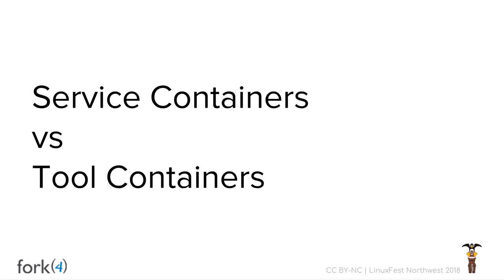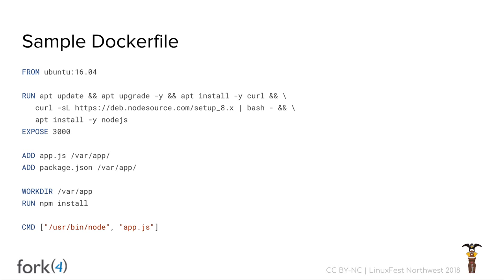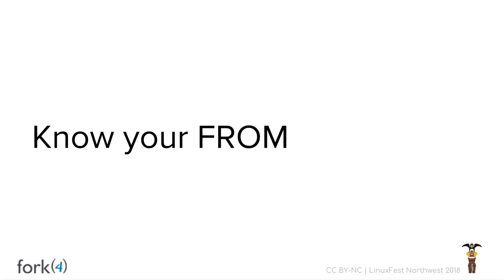Security starts at the top. Let's look at a sample Dockerfile. This is a very basic Dockerfile — you've probably written something like this. We're pulling down Node, installing it, adding our app, and now we have a Node runtime application container. But there's one particular line at the top I want to focus on: 'FROM ubuntu:16.04.' This tells Docker this is the image I want to base my image off — I'm going to inherit everything from this and build my new thing on top of it. My first tip: know your FROM — know where you're coming from.